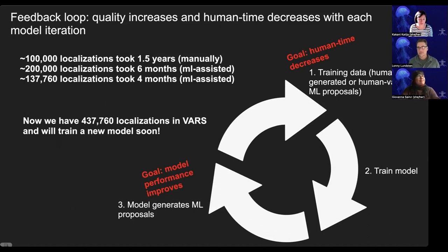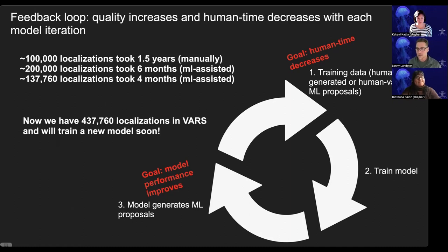We actually saw this happen. Initially, we used VARS Localized to manually create the first 100,000 localizations, which took about a year and a half. Then we used machine-learning-assisted processes to generate another 200,000, which took about six months. We recently generated another 137,000, and that only took four months. This machine learning pipeline is making the process much faster, increasing model performance and decreasing human time.